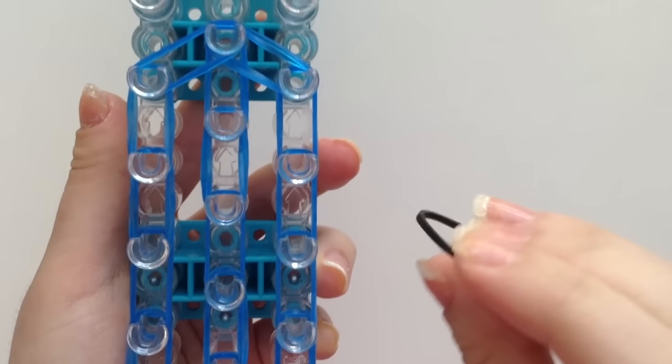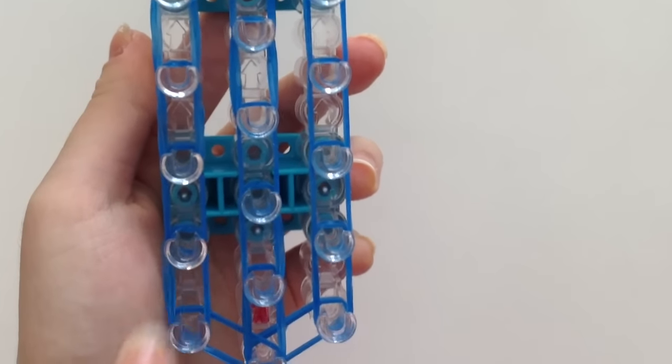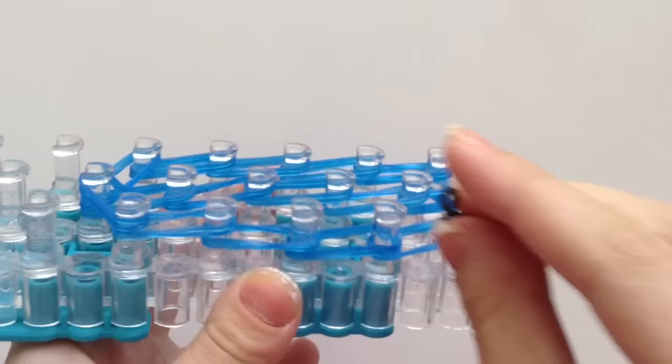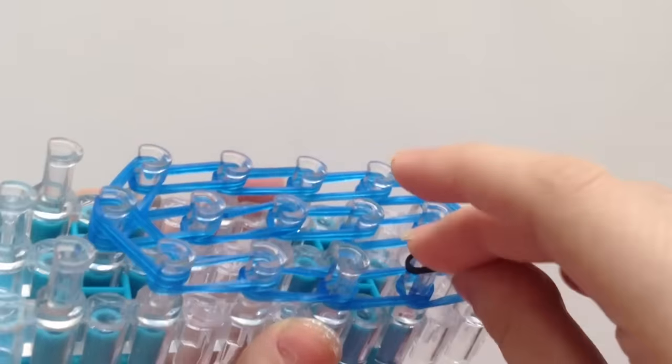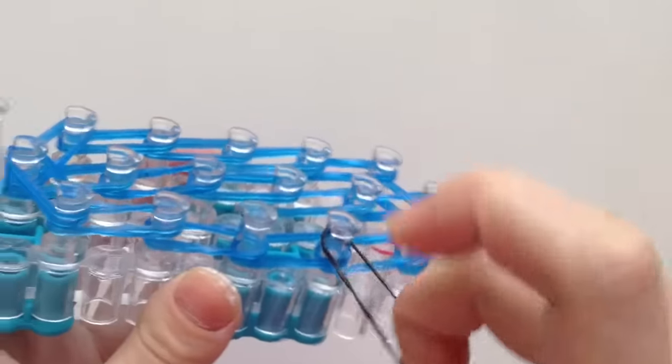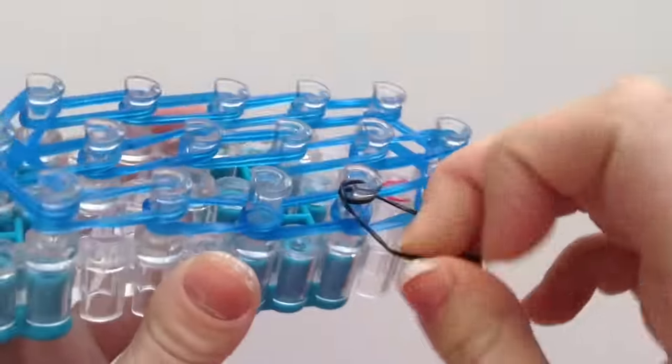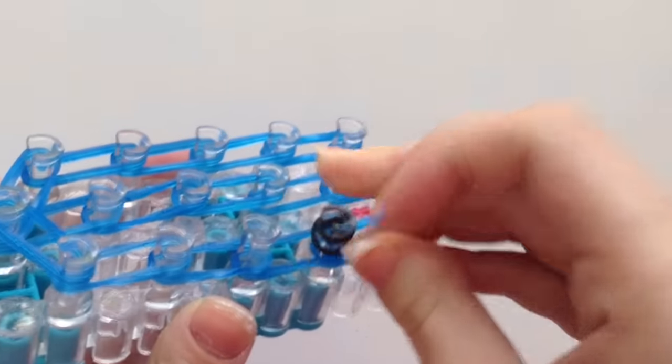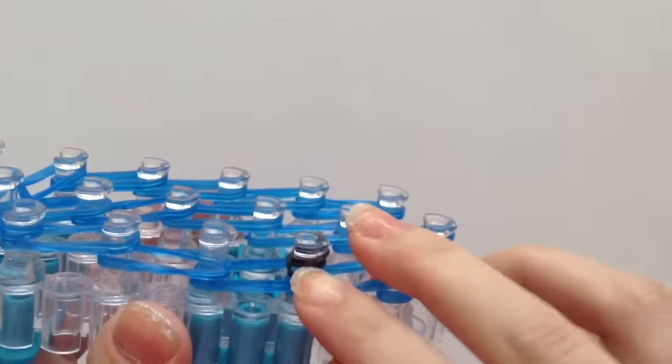Now take your black rubber band for the eye and go to the left column. And we're going to count up two. So on this second left peg right here, I'm going to place my black rubber band, just like a regular cap band. And I'm going to twist it so that there are three loops of black on that peg.